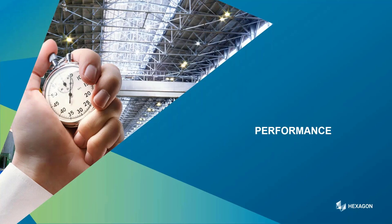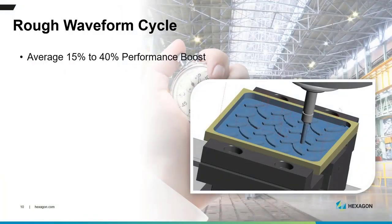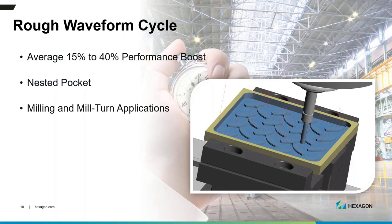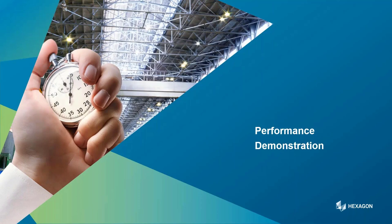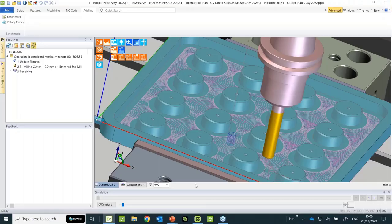Moving on to performance — something for everybody. We're targeting the Waveform Roughing cycle, which is the most popular algorithm. We're bringing down calculation time by between 15 and 40 percent, mainly on nested pockets — parts with bosses within a pocket. This improvement applies to everybody: milling, multi-plane, and mill-turn applications.